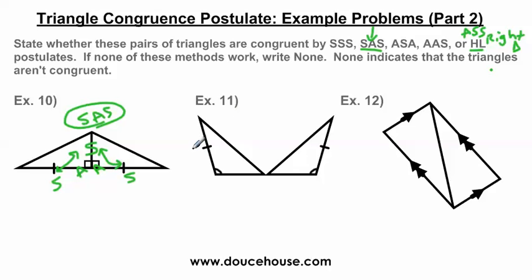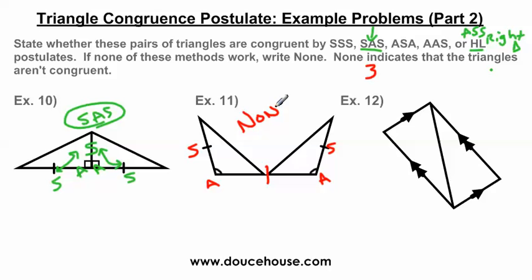Moving on to number eleven — these triangles are touching in the middle. The triangle on the left and the triangle on the right: this side is congruent to this side, and this angle is congruent to this angle. But I don't have any other indicators showing sides or additional angles are congruent, and this is not a vertical angle situation. Since I only have a side and an angle on each side, and I need a combination of three sides and angles, I do not have enough information to prove these are congruent. The answer is none.